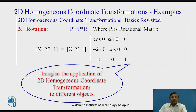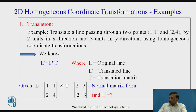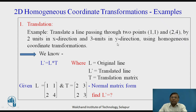At this point, I expect viewers to imagine some objects and try to apply these concepts of 2D homogeneous coordinate transformations. Let us now solve a simple problem. We are given a line passing through coordinates (1,1) and (2,4), and we are required to translate this line 2 units along the x-direction and 3 units along the y-direction using homogeneous coordinate transformation.